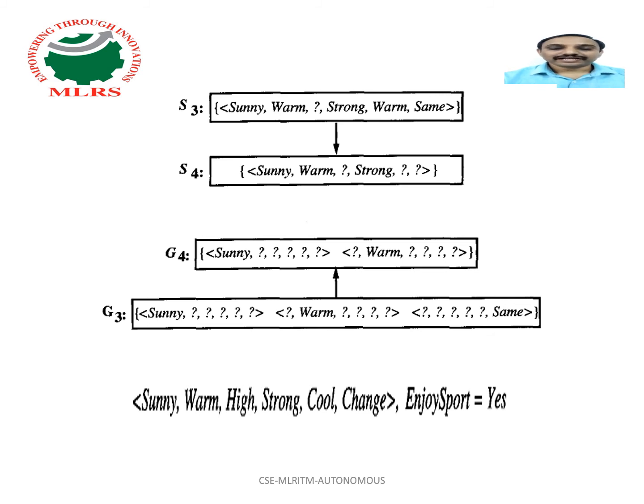It leads to a conflict in generalization. So the hypothesis which contains only forecast is removed from G3 to get G4.